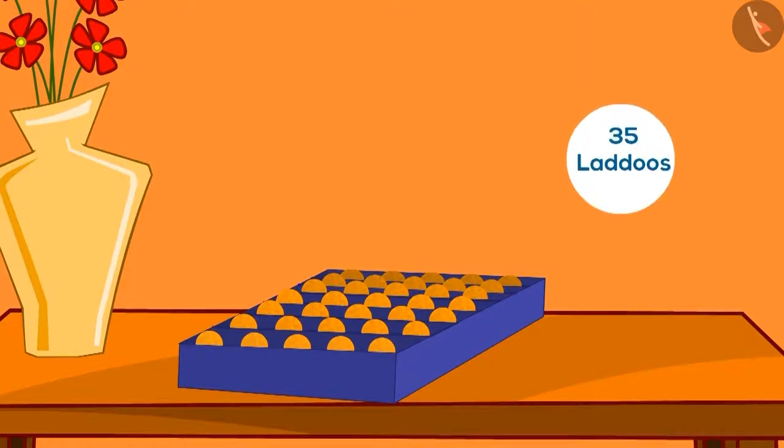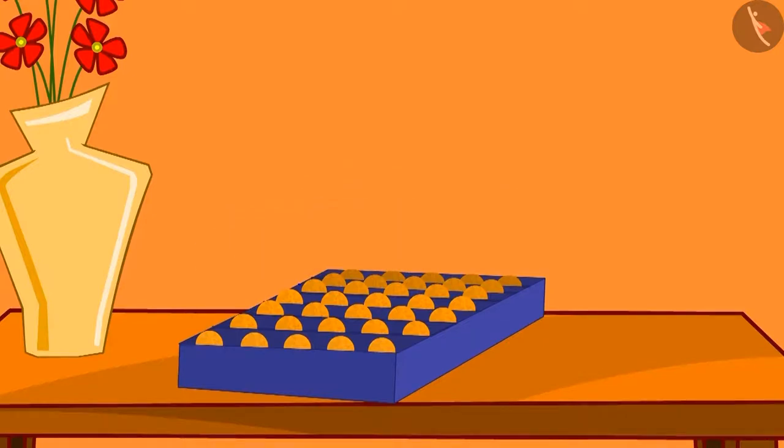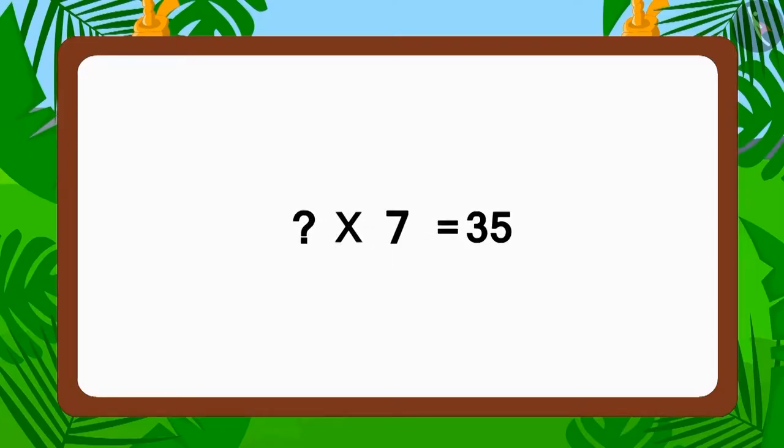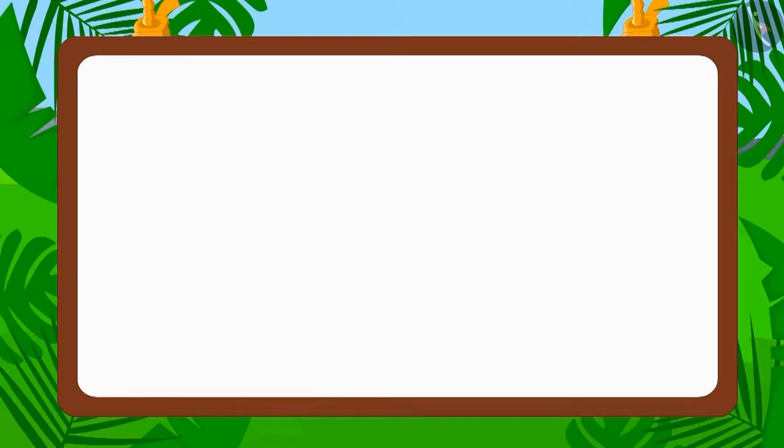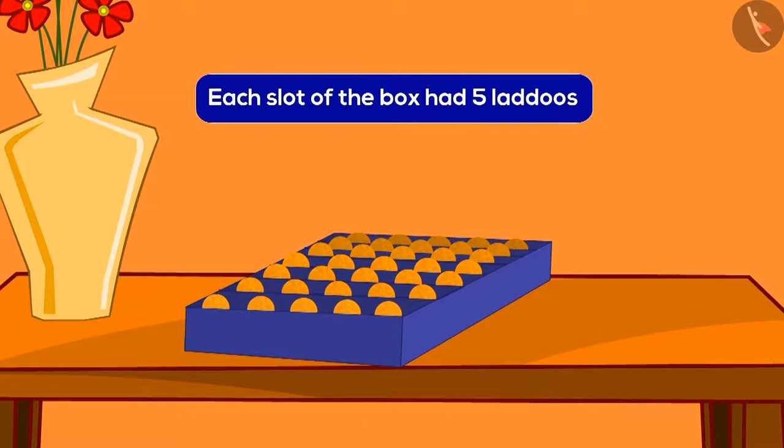There were seven vertical slots in the box. Can you tell how many laddos were there in each vertical slot? This question can be written in multiplication form like this. Now, can you make use of the method of finding factors learned in the last lesson and find the answer to this puzzle? You just have to find out when does 35 appear in the table of seven. So what multiplied with seven is 35? Five multiplied with seven. Each slot of the box had five laddos.